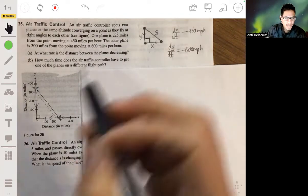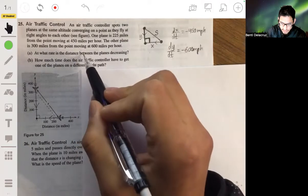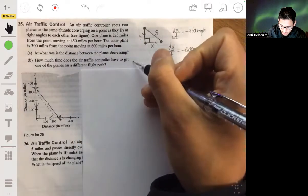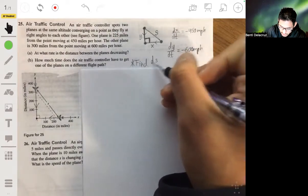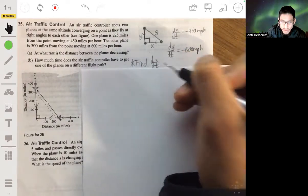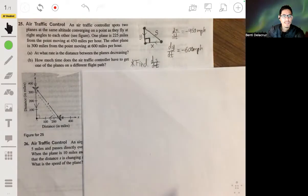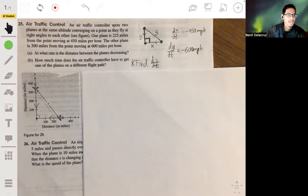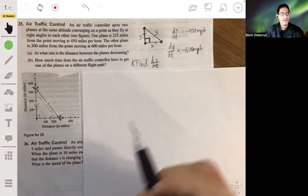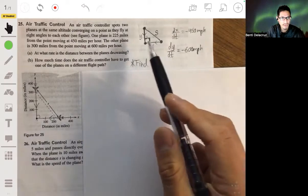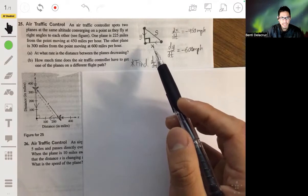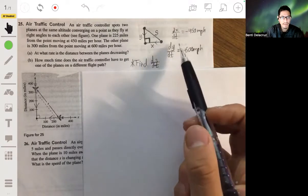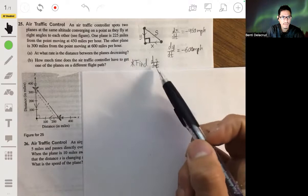Now we want to find the rate that the distance between the planes is decreasing. So ultimately we want to find the change in S, so dS over dt. We want to find what dS over dt is. So let's look to set up an equation that relates all these variables together so that we can then differentiate it with respect to time and then plug values into the variables and solve for dS over dt.